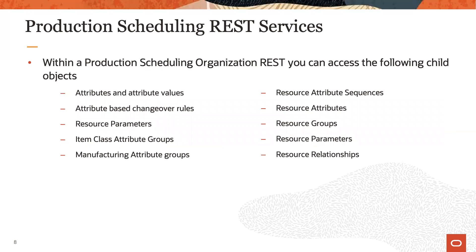While REST services will be provided for all scheduling organization data elements, the initial release of production scheduling will include data maintenance UIs only for a subset. For some data elements, it is necessary to use REST services to manage the data. These include: flagging an attribute for highlighting, specifying attribute value colors used for highlighting in the Gantt chart, maintaining attribute-based changeover rules, resource attribute sequences, and resource groups. Note that resource relationships are currently not used by the application. The specific approach for using REST services to manage this setup data will not be covered here; a white paper on Oracle Customer Connect will outline this in detail.